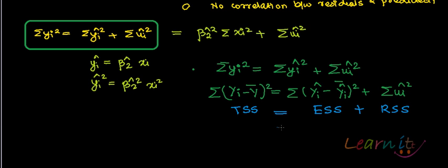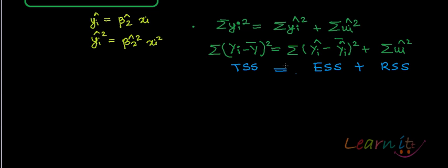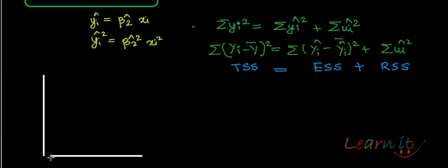Total sum of squares can be broken down into two parts: explained sum of squares and residual sum of squares. We can see this in the form of a diagram.